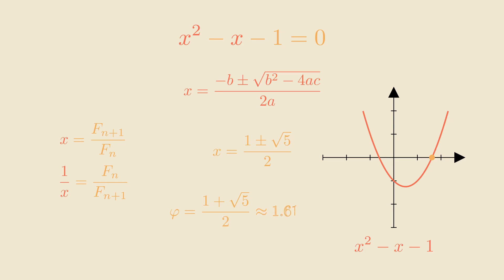Now the positive variant of this is actually equal to the golden ratio, which is approximately 1.61803. So there it is, there's the connection between the Fibonacci sequence and the golden ratio.